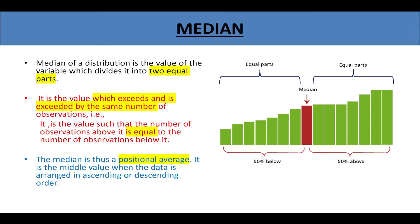First, let us see what is the median. Median of a distribution is the value of the variable which divides it into two equal parts. That means 50% of the values will lie below the median and 50% of the values will lie above the median. That is why median is also called the positional average.